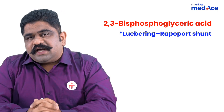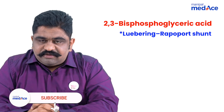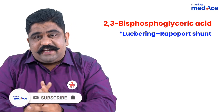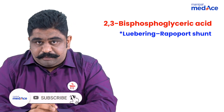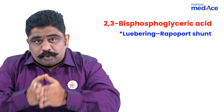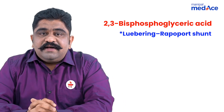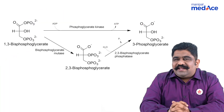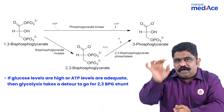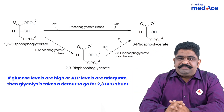When will this shunt happen? When your body has enough amount of glucose and when the cells have enough amount of ATP, you do not have to depend on glycolysis as the regular pathway to produce all the ATP. So glycolysis can actually afford to take a detour to produce 2,3-BPG.